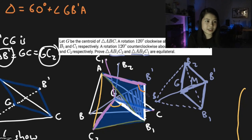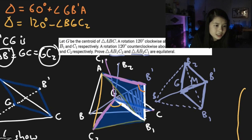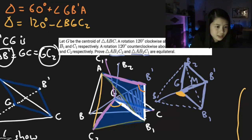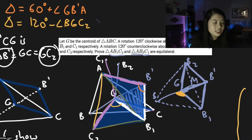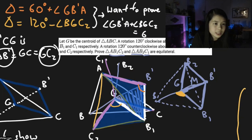Yellow equals 120° minus angle BGC2. The 120° comes from angle BGB1 — since the other piece is 60°, this one is 120° — and the yellow angle is that minus the small sliver BGC2. Setting orange equal to yellow, we need to prove that angle GB'A plus angle BGC2 equals 60°.